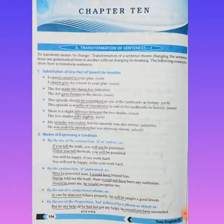Let's see the first example: 'I cannot consent to your plan' - verb form - changing to noun form: 'I cannot give my consent to your plan.' The act made the slaves free - adjective form. The act gave freedom - noun form - to the slaves.